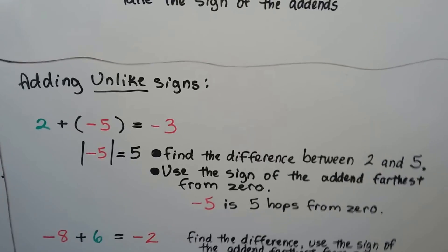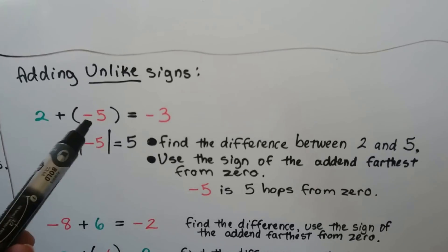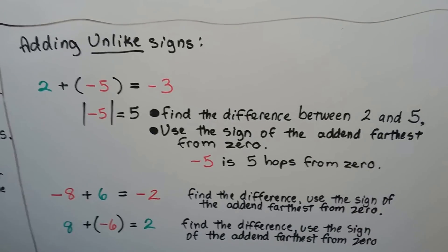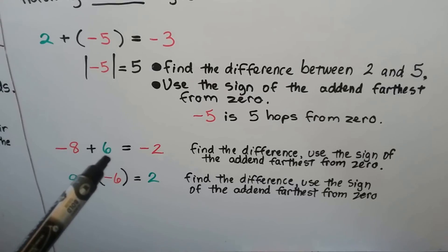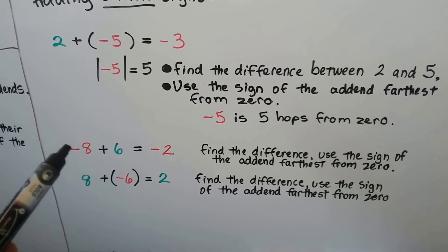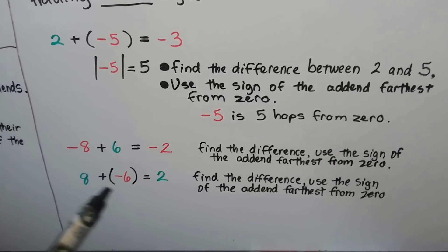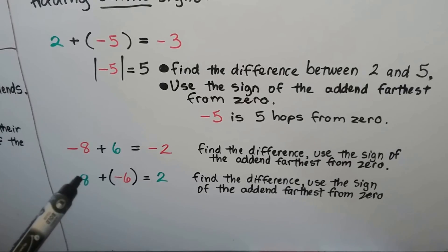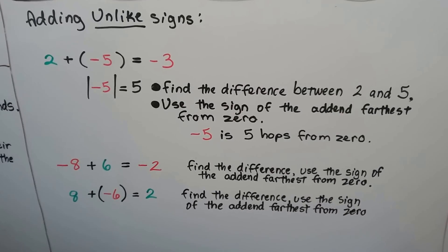When we're adding unlike signs, we have a positive 2 plus a negative 5. We find the difference between the 2 and the 5 — that's a 3 — and take the sign of the number that's farthest from 0. Negative 5 is 5 hops from 0; the 2 is only 2 hops from 0, so the answer is negative 3. With negative 8 plus 6, the difference is 2, and negative 8 is farther from 0, so the answer is negative 2. With positive 8 plus negative 6, the difference is 2, and positive 8 is farther from 0, so the answer is positive 2.